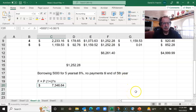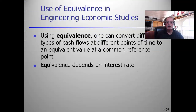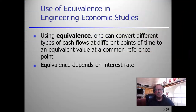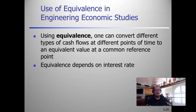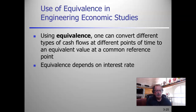Let's move on to new material for this part of week three. We left off saying that using equivalence we can convert different types of cash flows to an equivalent value at a common reference point. Typically that reference point is period zero, though it might be the last period or some period in between. For most analysis purposes and FE exam problems, it's time period zero.